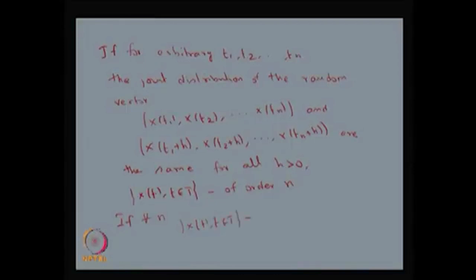This is called a strict sense stationary process for any integer n. If it is satisfied only up to a maximum integer n, it is strict sense stationary of that order n. If it is satisfied for all n, for any integer n, then it is called simply a strict sense stationary process.